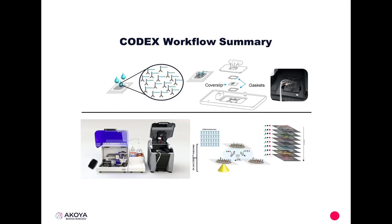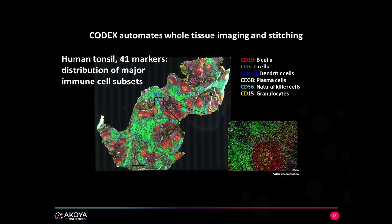As a summary: we section our tissue onto a cover slip, incubate it with a cocktail of DNA-barcoded primary antibodies, then insert it into the CODEX insert on the microscope stage. The full integration of CODEX with the microscope allows us to automate both the fluidics and the imaging processes to acquire three markers in every CODEX cycle. Here we can see CODEX automation used for stitching all images together for a complete 41-marker image of a one-centimeter-squared human tonsil tissue, though only six markers are shown at once for clarity.